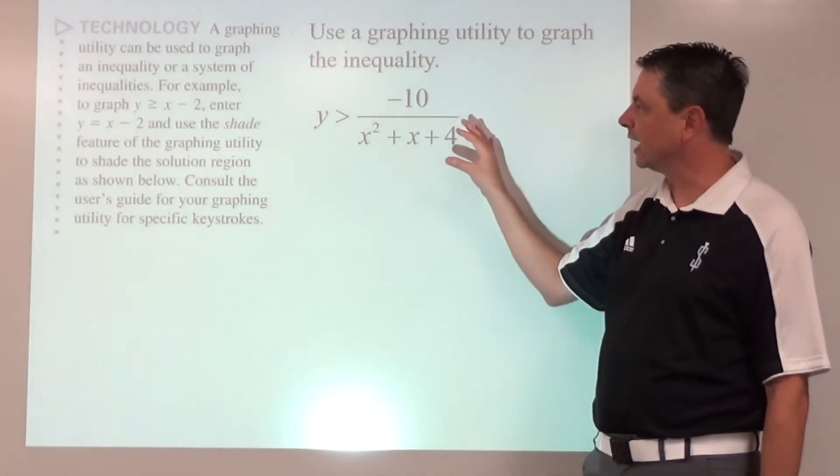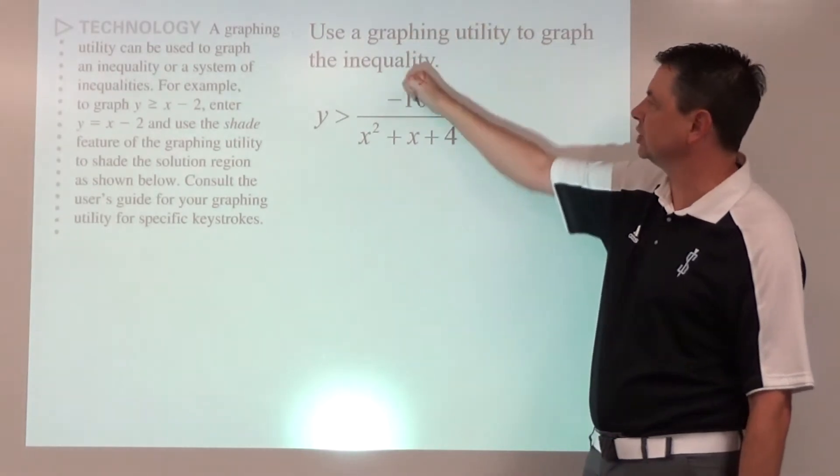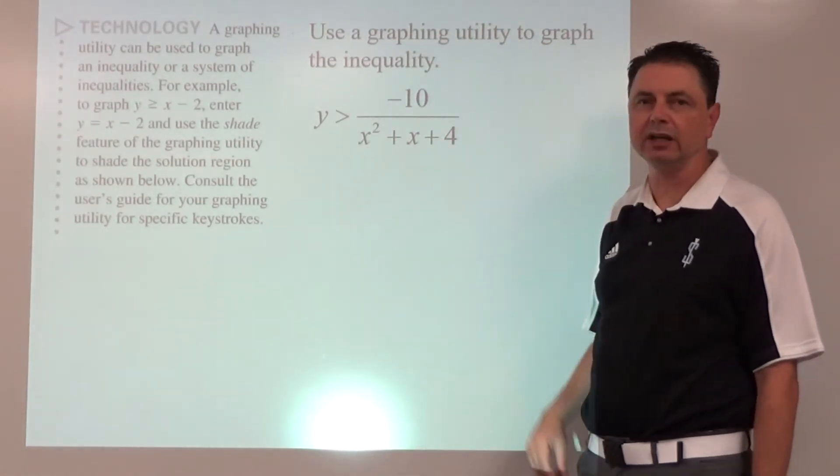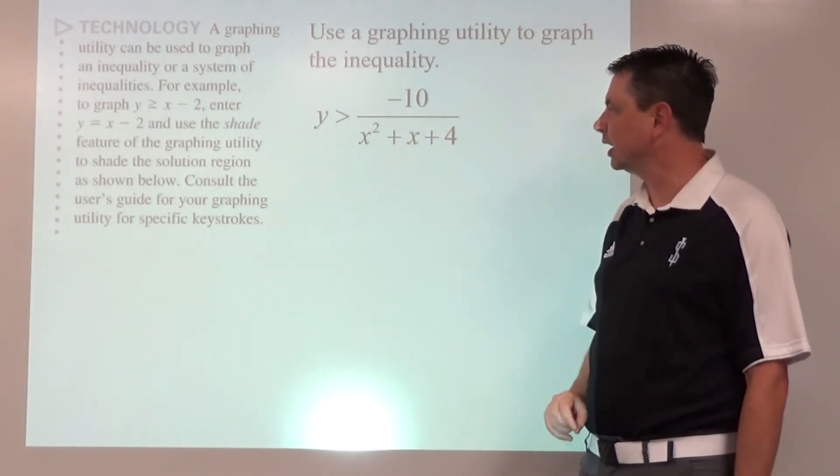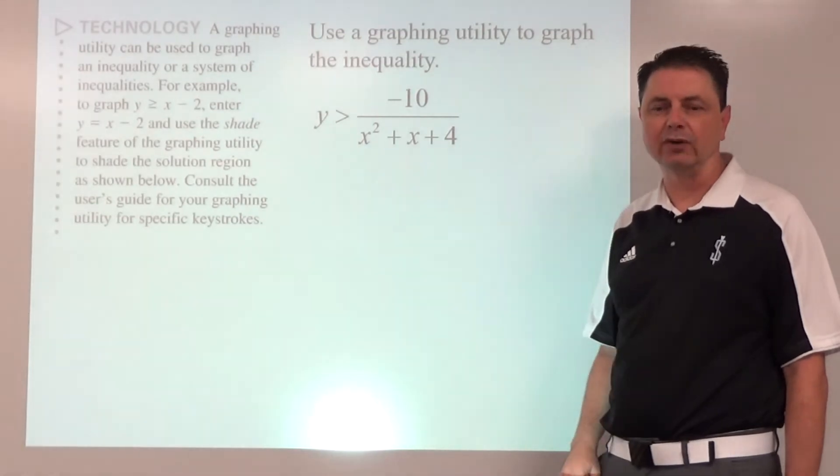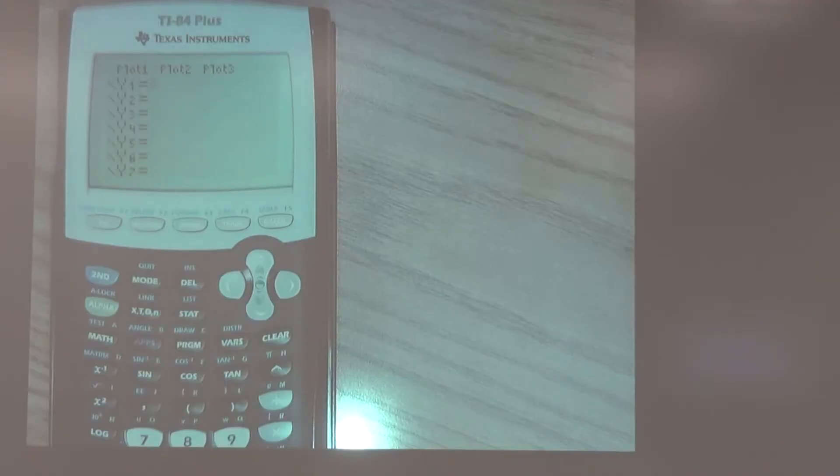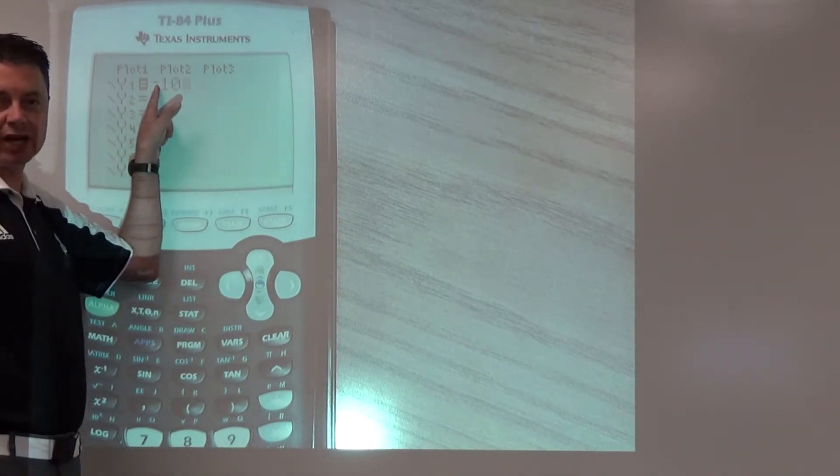We're going to first start out though with graphing just a single inequality and using technology to help us. We're going to use a graphing calculator for this. Y is greater than negative 10 divided by x squared plus x plus 4. Take a look at that on a graphing calculator. We input the function. We said y is equal to negative 10. Again, make sure it is a negative and not a subtraction sign. The Texas Instrument calculator will not like that.